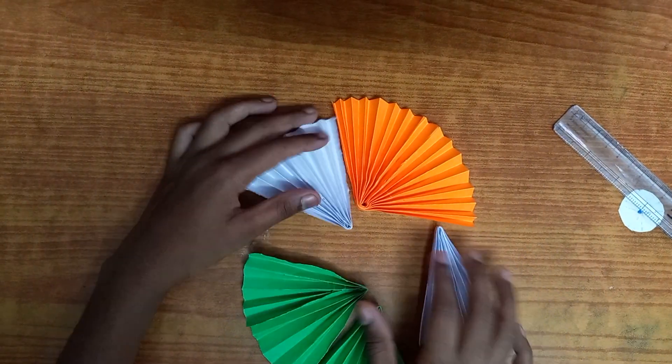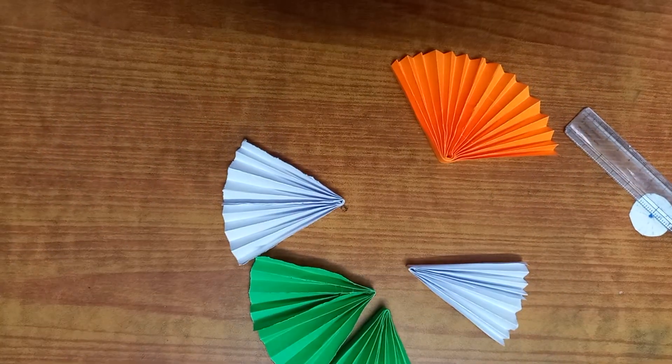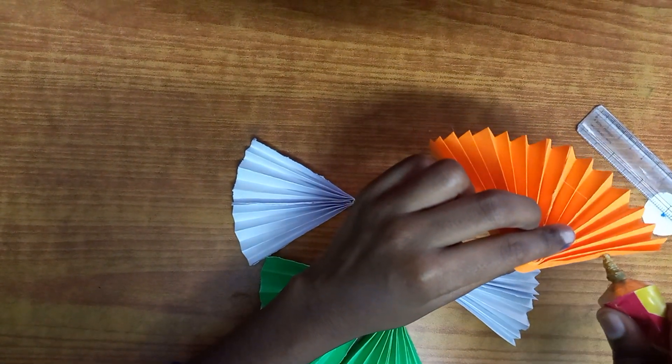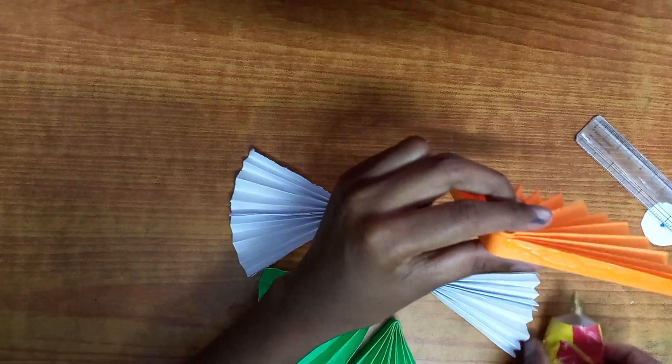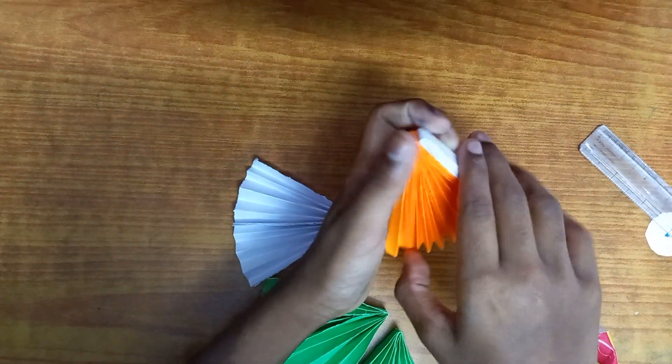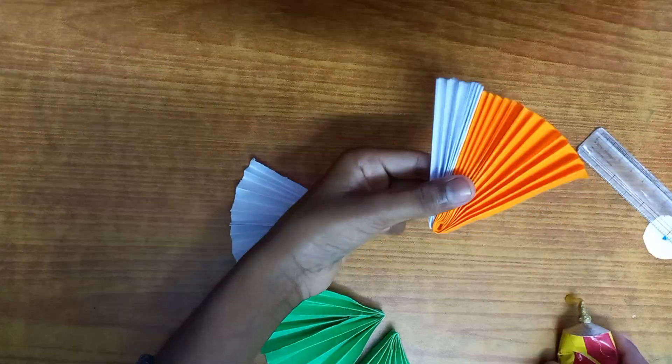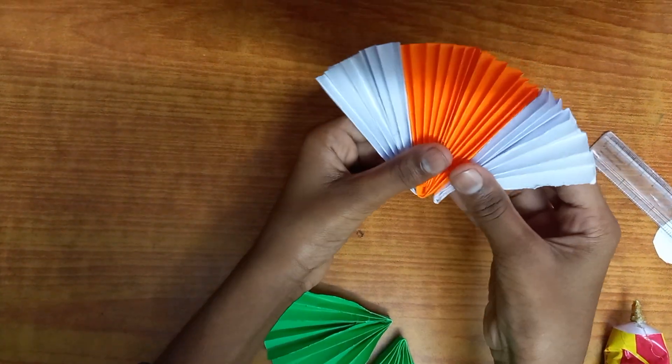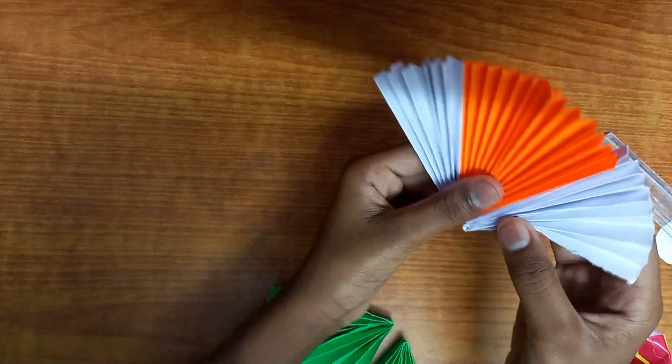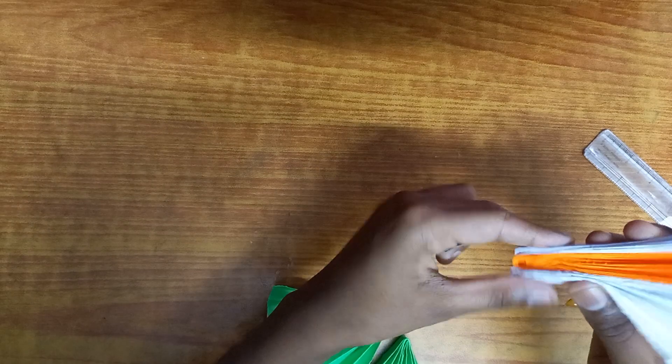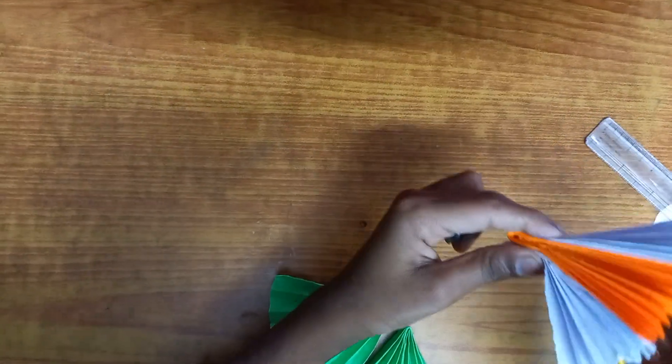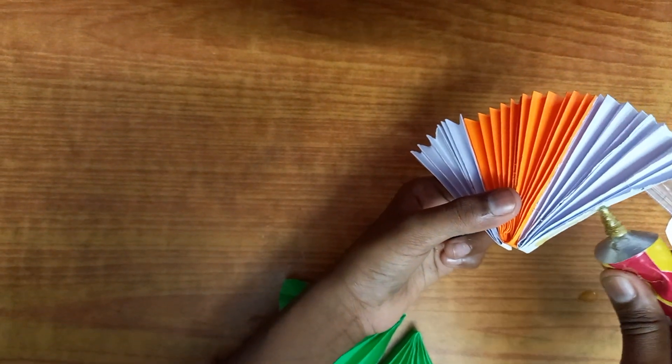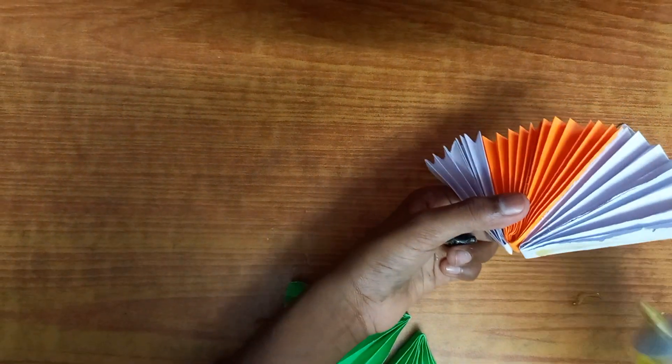Now that that is all done, we are gonna super glue the colors together. So with the orange, apply glue—orange and white—and press it down. Repeat on this side as well. There we go. Hold it down for a pretty long time so it gets time to fix itself. Now white with orange—I mean white with green.